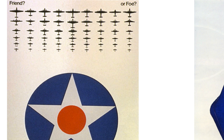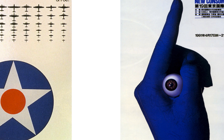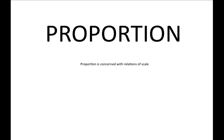Scale assists the viewer in making sense of proportions. The varieties of aeroplanes are represented to scale in relation to each other. The eye in this composition, used as a metaphor, is visually striking and effective because its scale is proportionally correct in relation to the scale of the hand.